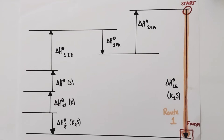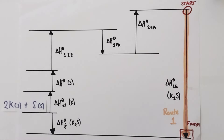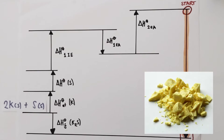The first thing I'm going to do is to fill in the various enthalpy changes taking place, starting with this one bottom left, which is the enthalpy change of formation of potassium sulphide. The enthalpy change of formation is the enthalpy change for the formation of one mole of a substance from its elements in their standard state under standard conditions. The elements in their standard states here are potassium and sulphur. Potassium, being a metal, is a solid, and sulphur is a solid non-metal, yellow in colour.